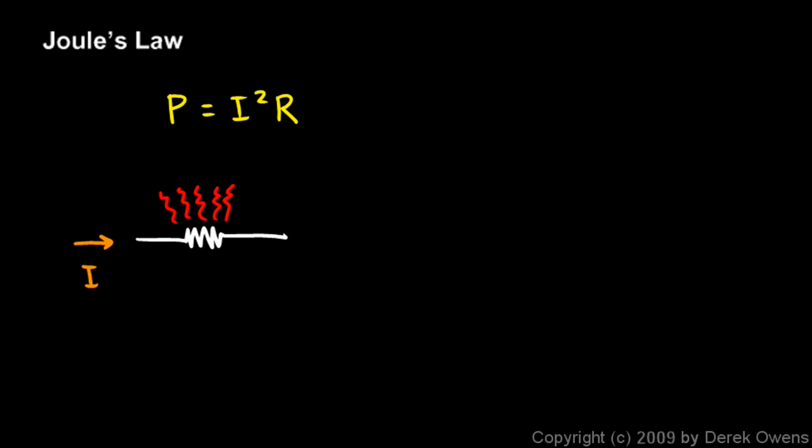And Joule said that the power dissipated by a resistor is proportional to the square of the current. And you see that in the equation. There's the I squared. The power depends on the square of the current I.